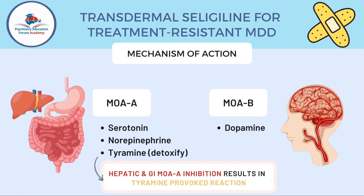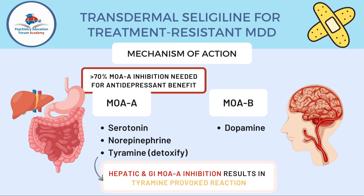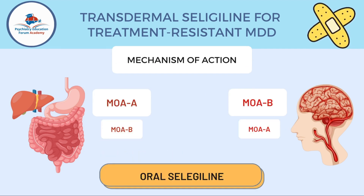If you inhibit the hepatic and GI MAO-A and then give somebody tyramine-containing food, it will provoke a tyramine reaction. On the other hand, at least 70% of MAO inhibition is needed for the antidepressant benefit. These numbers are based on studies.